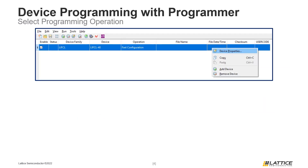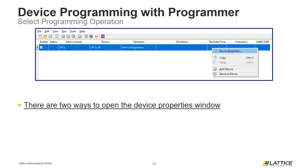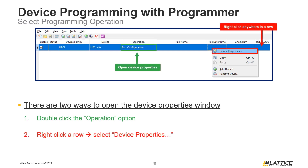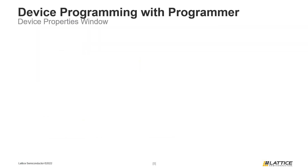The third step in the programmer flow is to configure the programming settings for a device. There are two ways the programmer settings can be opened: the first is to double-click the field called Operation, and the second is to right-click anywhere in a device's row and select the Device Properties option. Both methods open the properties window for a device.